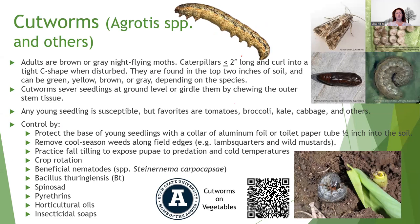Cutworms are a problem with seedlings and they form a characteristic C shape — that's their hallmark. Any type of seedling is susceptible. You can protect the base of seedlings with aluminum foil or toilet paper tubes. Get rid of weeds, till your garden to knock the worms up, and practice crop rotation. Treatments include nematodes, BT, spinosad, pyrethrins, horticultural oils, and insecticidal soaps. If you want more information on their life cycle and treatment, check out the Utah State publication.